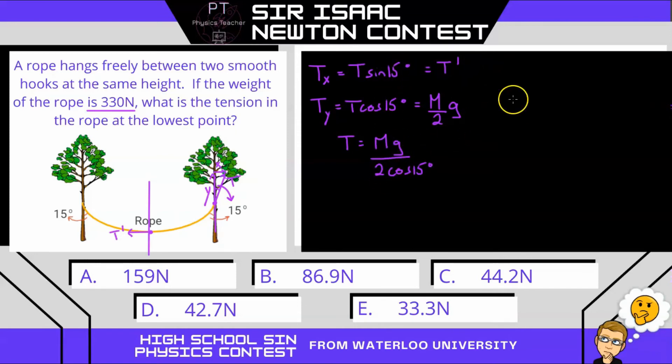But we know what T equals. It is mg over two times the cos of 15. And then we have all of that multiplied by the sine of 15. So that can be simplified into sine over cos is tan.